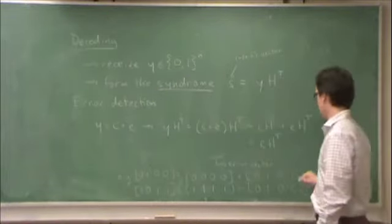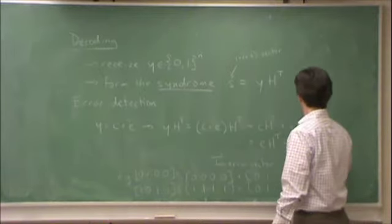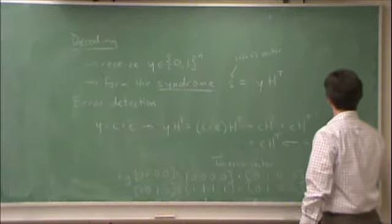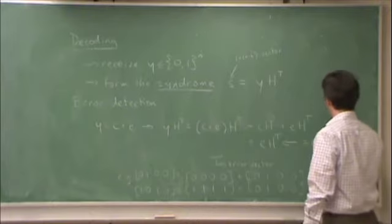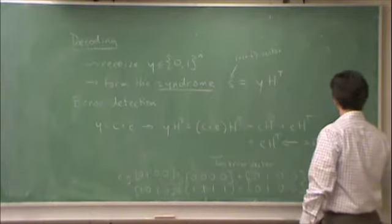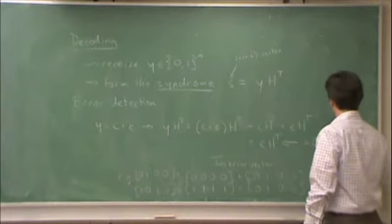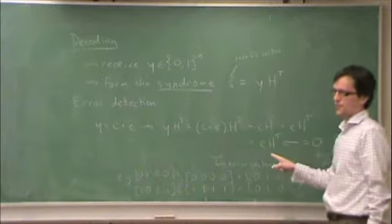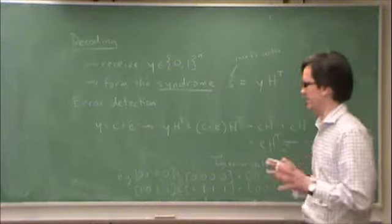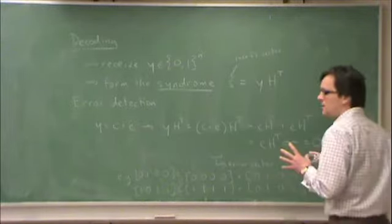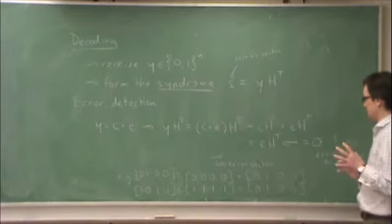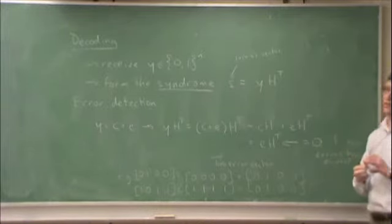If no errors have occurred, this will be 0. If it's non-zero, I can guarantee that an error has occurred. However, under what circumstances will this be 0 even if an error has occurred?